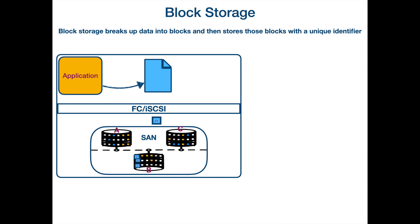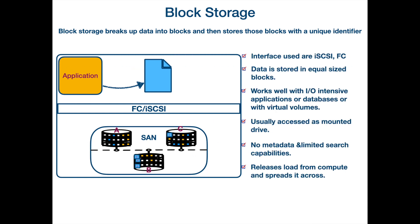Once the identifier is specified, the blocks will be able to save. If you want to recall the file or open up the file again, the file system will go back using the unique identifier, assimilate all the blocks and give the file back to you. The interfaces that block storage uses are iSCSI or FC. Data is stored in equal size blocks. It works well with IO intensive applications because we are directly dealing with blocks on the drive, making it perfect for high transactional databases or virtual volumes. Usually accessed as mounted drives.